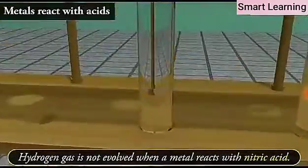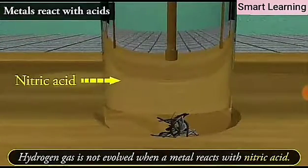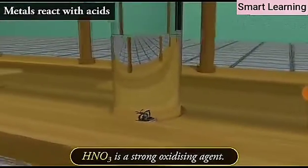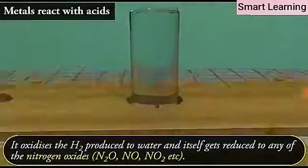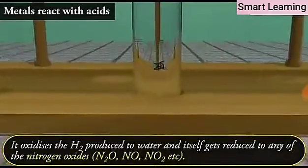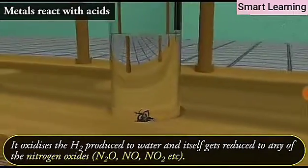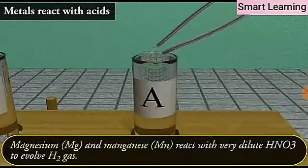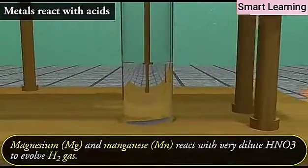Hydrogen gas is not evolved when a metal reacts with nitric acid. It is because HNO3 is a strong oxidizing agent. It oxidizes the H2 produced to water and itself gets reduced to any of the nitrogen oxides, N2O, NO, NO2, etc. But magnesium or Mg and manganese or Mn react with the very dilute HNO3 to evolve H2 gas.